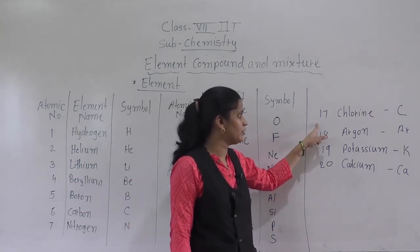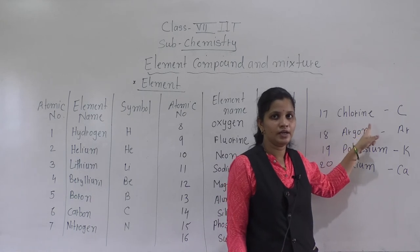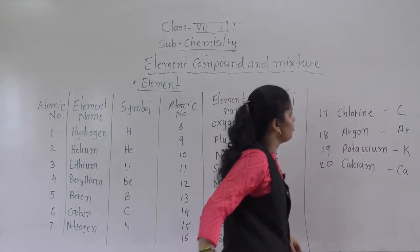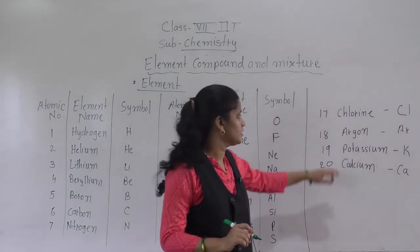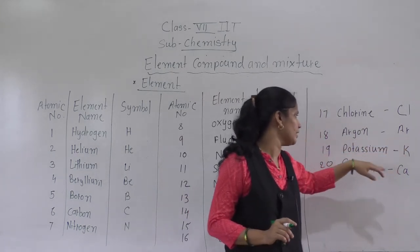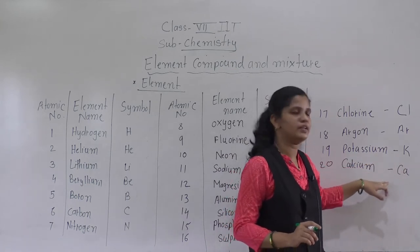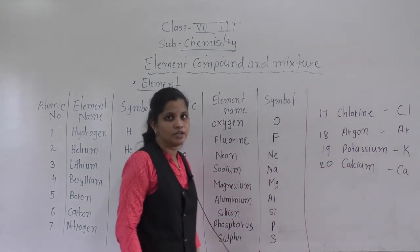See, 17 atomic number was Chlorine and Chlorine symbol is Cl. Chlorine symbol is Cl, Argon Ar, Potassium K, and Calcium Ca.